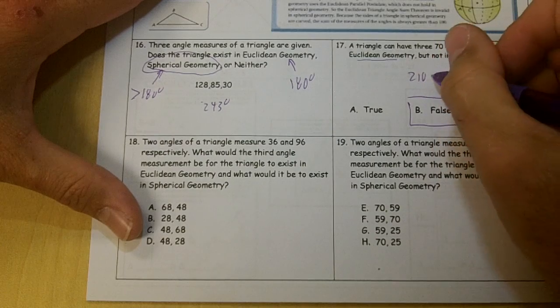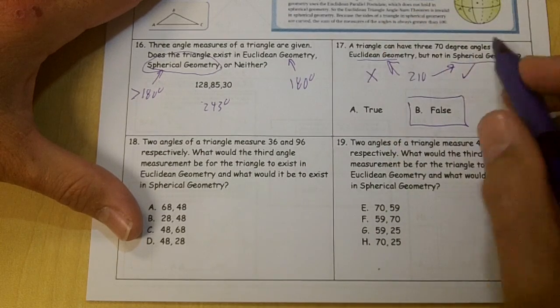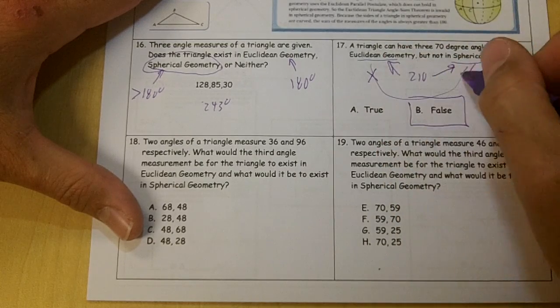It's 210 degrees. It would work in spherical, but in Euclidean, it would not work. So these two need to be swapped to make it true, don't they?